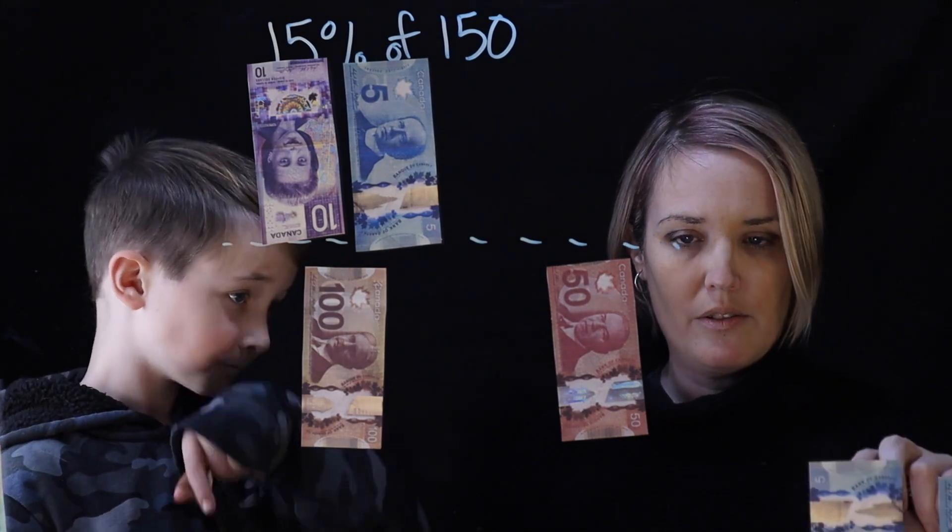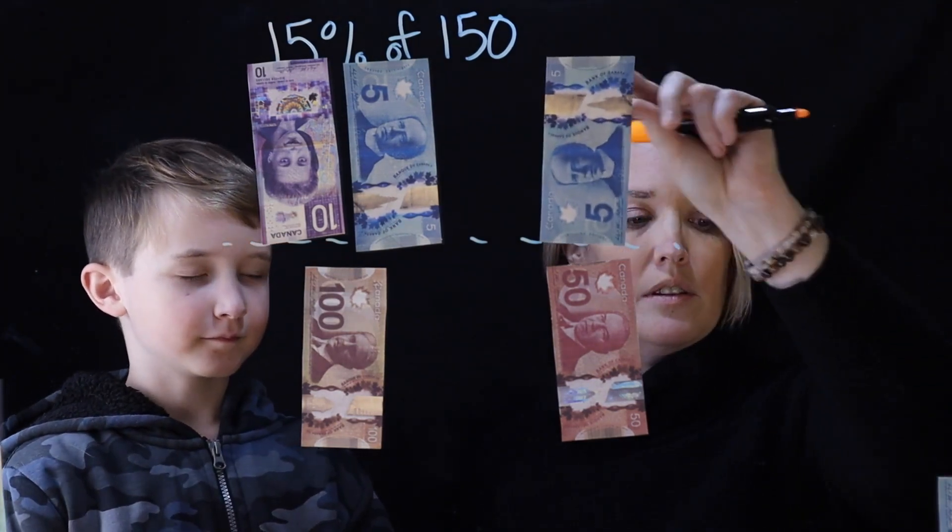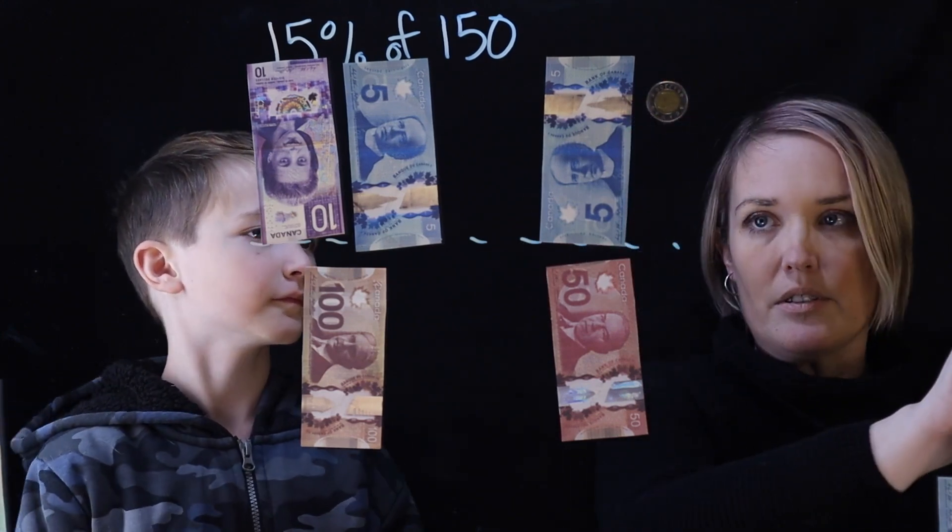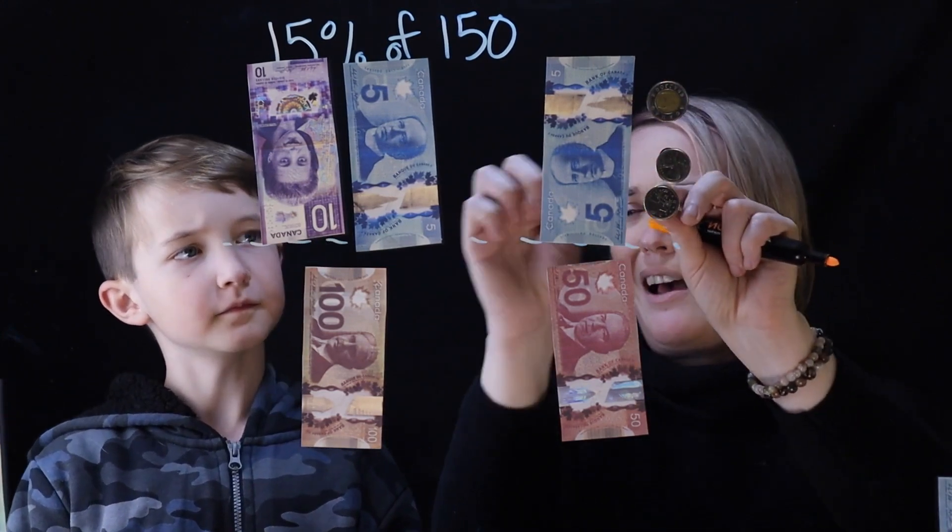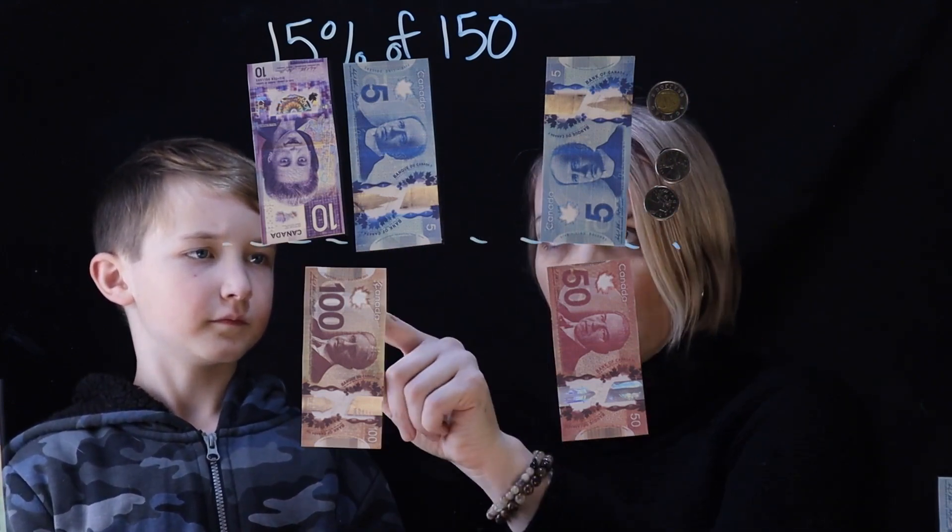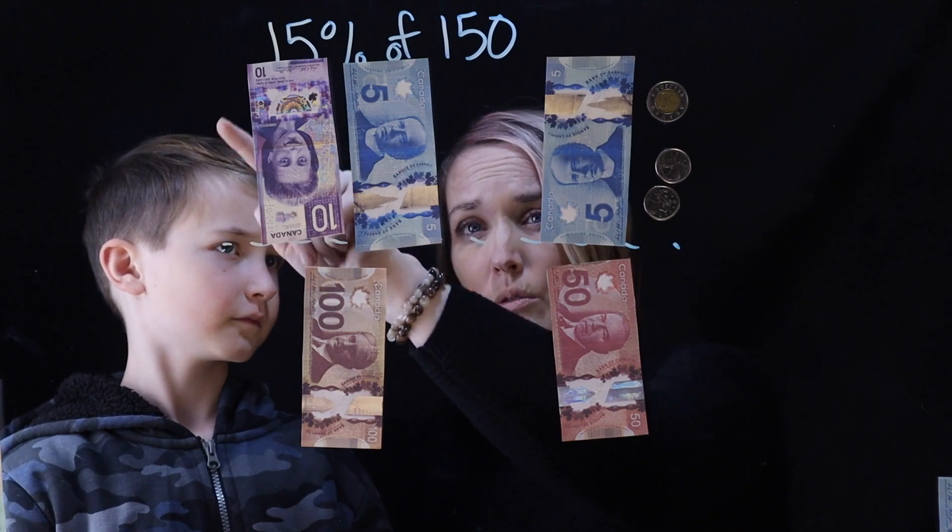Seven dollars and fifty cents. Okay, so here's five and then seven and fifty cents, you said, right? That's because it's half of this one, right? So if someone makes a hundred and fifty dollars, they have to give you this total amount.